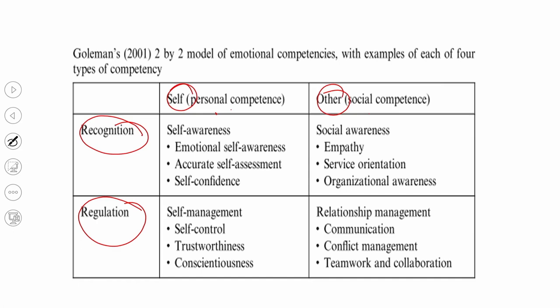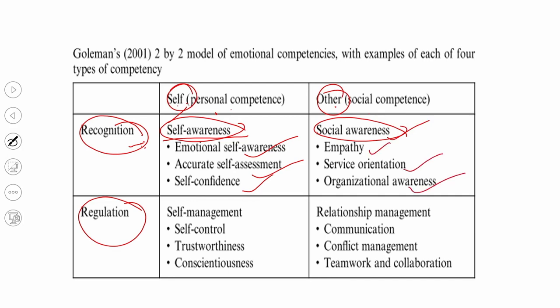When you are able to recognize yourself and understand your own emotions, that leads to self-awareness — including emotional self-awareness, accurate self-assessment, and self-confidence. When you are able to recognize others' emotions and understand others, that leads to social awareness — including empathy, social orientation, service orientation, and organizational awareness. These four dimensions of Goleman's revised model reflect the interaction of recognition and regulation applied to self and others.